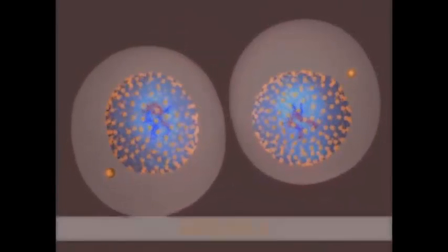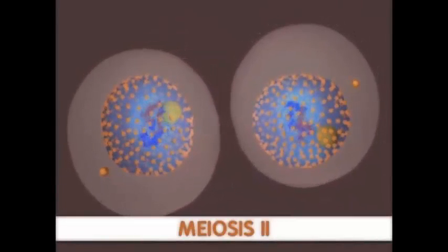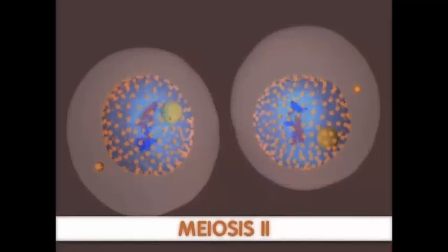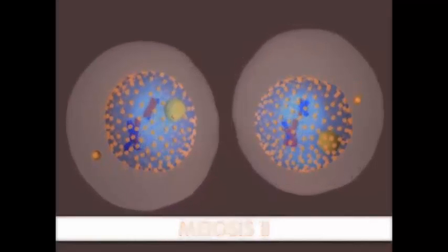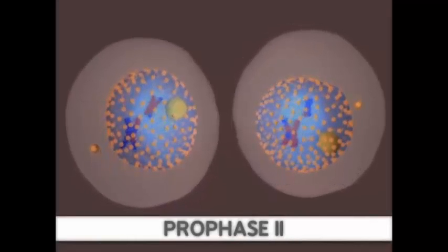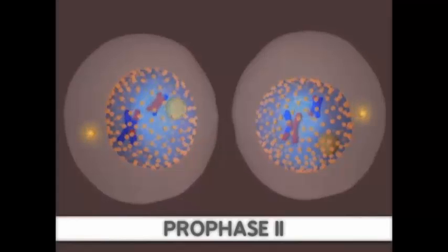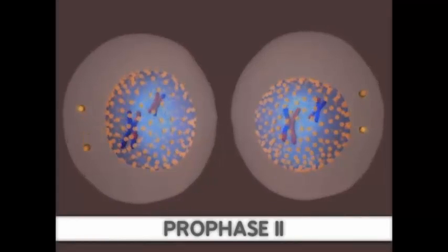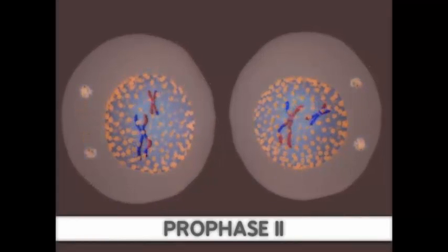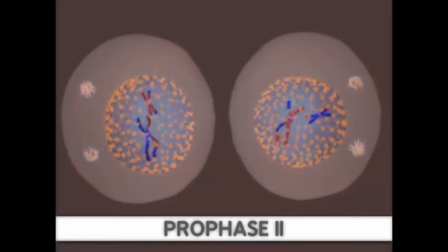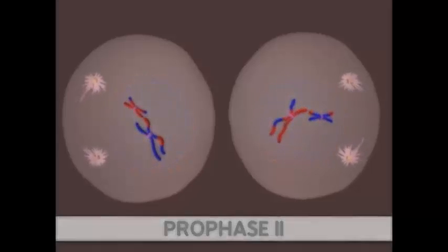There are several more key steps in prophase I. The nuclear membrane begins to break down. Then the two centrosomes migrate to opposite ends of the cell and microtubules appear. The microtubules then attach to the chromosomes.